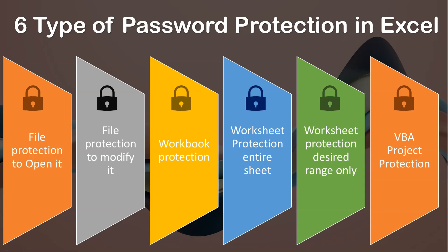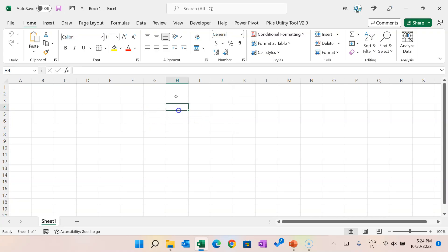Hello friends, welcome back. My name is PK. In this video you will learn six different types of password protection in Microsoft Excel. You will learn how to put a password on a file to open it, how to put a password to modify a file, workbook protection, worksheet protection, worksheet protection on a desired range, and how to put a password on your VBA project. Let's start without delay.